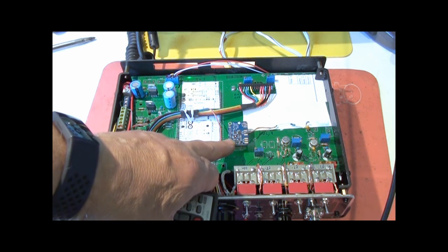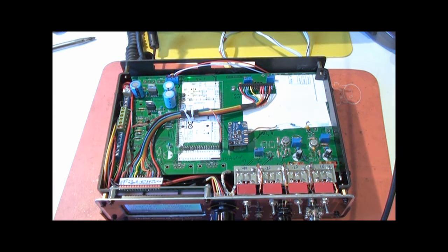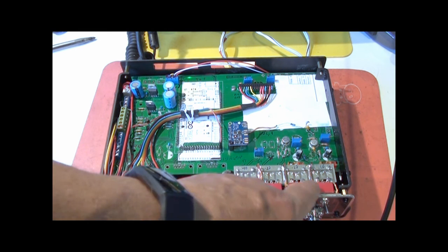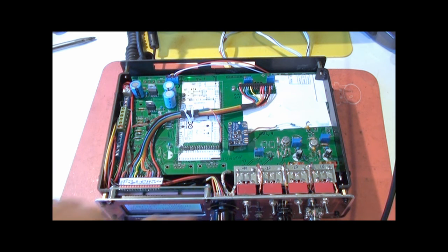This is the phase lock loop chip. A couple of 2N5109 amplifiers. One's an amplifier and one's an emitter follower. The emitter follower is used to drive the attenuators.